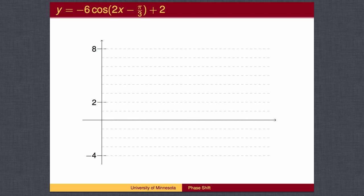Let's mark the y-axis first: the center line is at 2, the bottom at negative 4, and the top at 8. We mark the x-axis every pi over 12, emphasizing the quarter marks at pi over 4 (3 pi over 12), pi over 2 (6 pi over 12), 3 pi over 4 (9 pi over 12), and pi (12 pi over 12). The reference points for a negative cosine wave are placed at the bottom, middle, top, middle, and bottom.